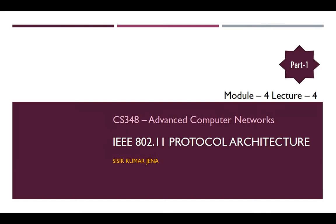Hello and welcome to the course CS348 Advanced Computer Networks. This is lecture 4 of module 4. In this lecture we are going to discuss about IEEE 802.11 protocol architecture, and this is part 1. Part 2 is basically dependent upon this lecture, and this is the fundamental requirement for understanding part 2. So let us begin.